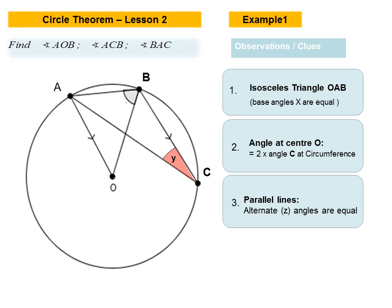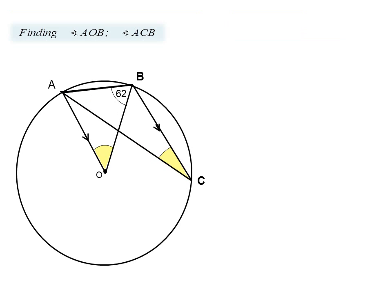Thirdly, we note that we have two parallel lines AO and BC. Once we see parallel lines, as outlined in lesson number one, we should start thinking of applying the principle of alternate angles being equal, because a Z-angle will exist. Here we note the Z-angle and the two angles which would be equal.